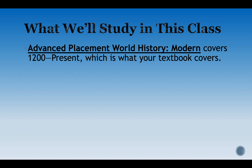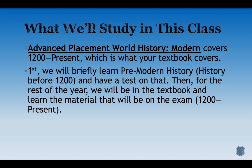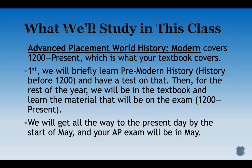Throughout the year we are going to cover the years 1200 to the present — about 800 years — which is what the AMSCO textbook covers. First we'll briefly learn pre-modern history before 1200 and test our knowledge on that. Then for the rest of the year we'll be in the textbook learning material for the exam, from 1200 to the present. We will get all the way to the present day by the start of May, and your AP exam will be in May.